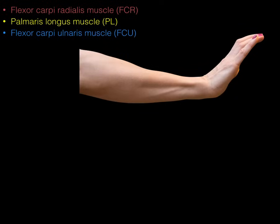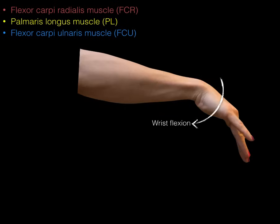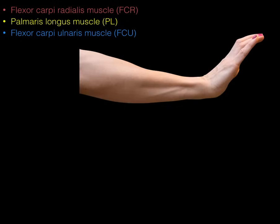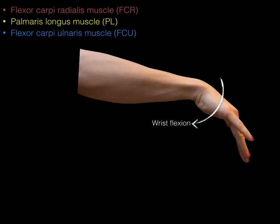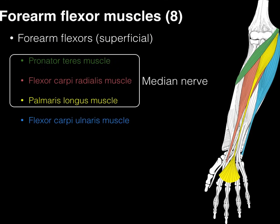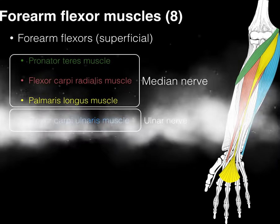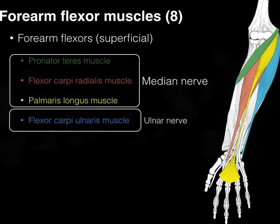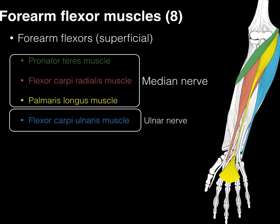If you're wondering what innervates the flexor carpi ulnaris, remember: it has 'ulna' in it, so it's the ulnar nerve. The flexor carpi radialis, palmaris longus, and flexor carpi ulnaris all flex the wrist. Of the four superficial muscles, three are innervated by the median nerve, and the one with 'ulna' in it is innervated by the ulnar nerve.